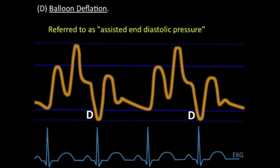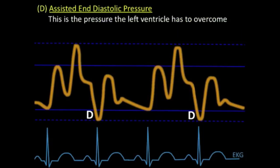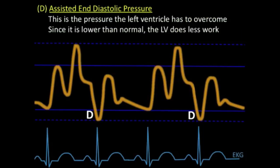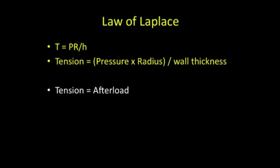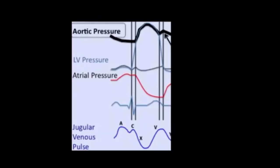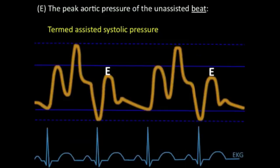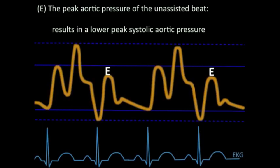This IABP monitor is connected through the ECG out interface to the patient monitor and receives signals from the monitor, such as arrhythmia signals and respiration signals.